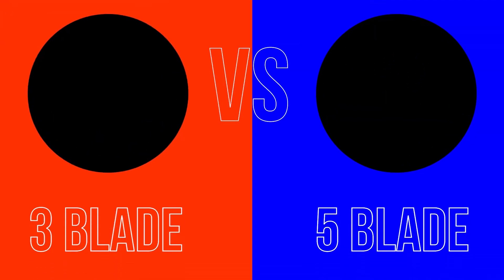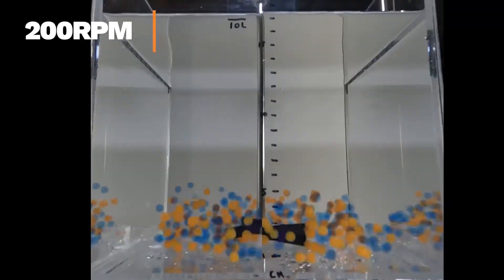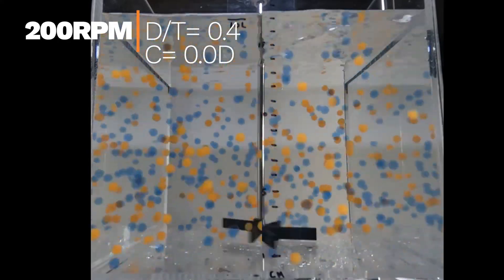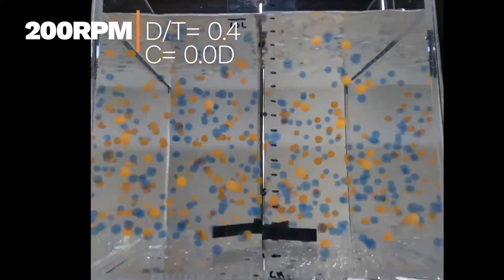The difference between a 3 and a 5 blade agitator is drastic. Notice the velocity of the particles and notice the dramatic difference in turbulence at the interface.